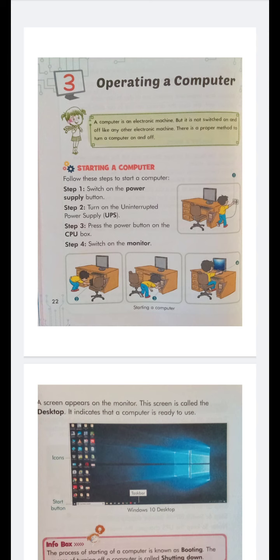To start a computer we should follow these steps. Step one is switch on the power button. Step two is turn on the uninterrupted power supply, UPS. Step three is press the power button on the CPU box. Step four is switch on the monitor. You also know a computer is an electronic machine, but it is not switched on or off like any other electronic machine.